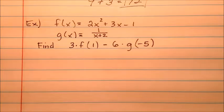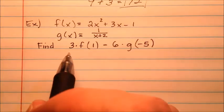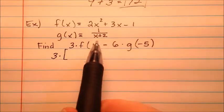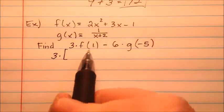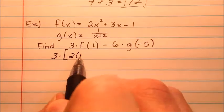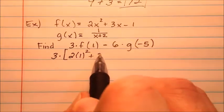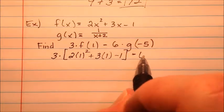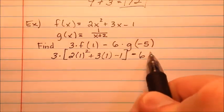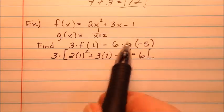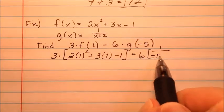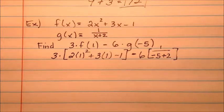So let's go ahead and substitute our values in. So I'll have 3 times f of 1. So f of 1 means I'm going to plug 1 in for these x's, so 2 times 1² + 3 times 1 - 1, then I'm going to subtract 6 times, and our g with negative 5 in there will be 1 over negative 5 plus 2 there in the denominator.